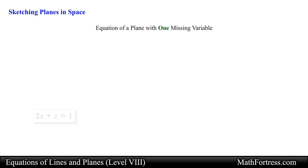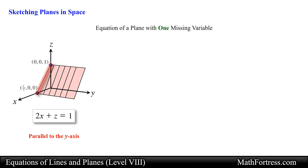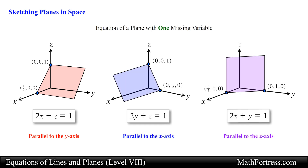If an equation of a plane has a missing variable, such as the equation 2x plus z equals 1, the plane must be parallel to the axis represented by the missing variable. For example, to graph this plane we draw the xz trace by using the x and z intercepts. Then draw traces parallel to the xz trace along the positive and negative y axis, enclosing the traces with a rectangle. This procedure can be replicated with equations of planes that have a missing x variable or z variable.